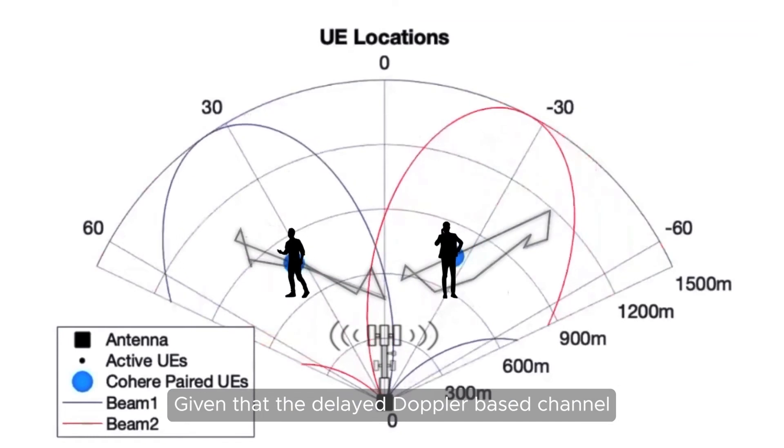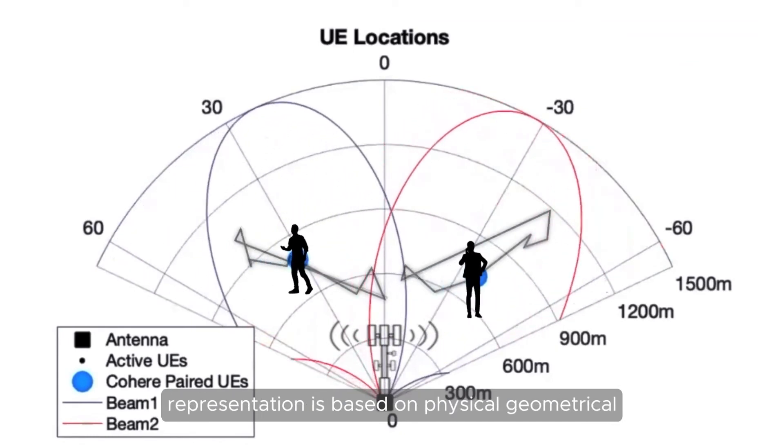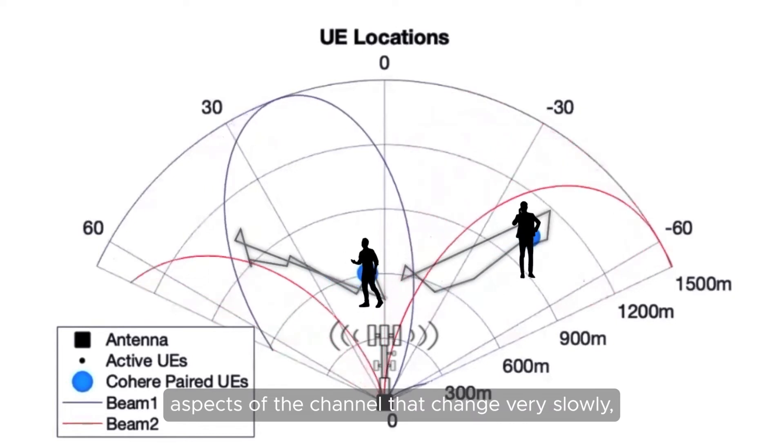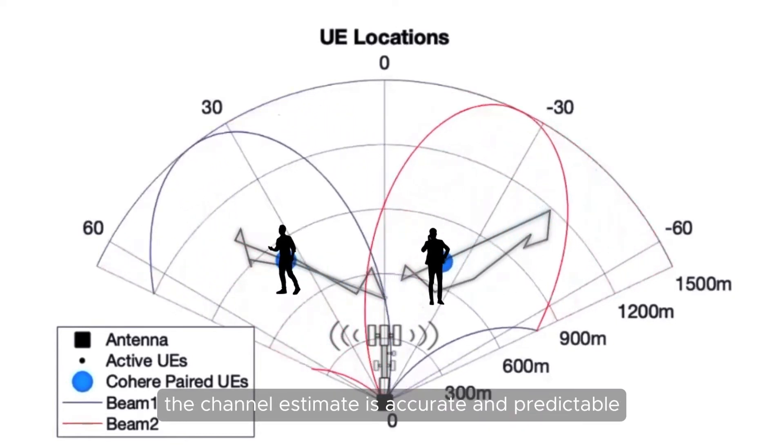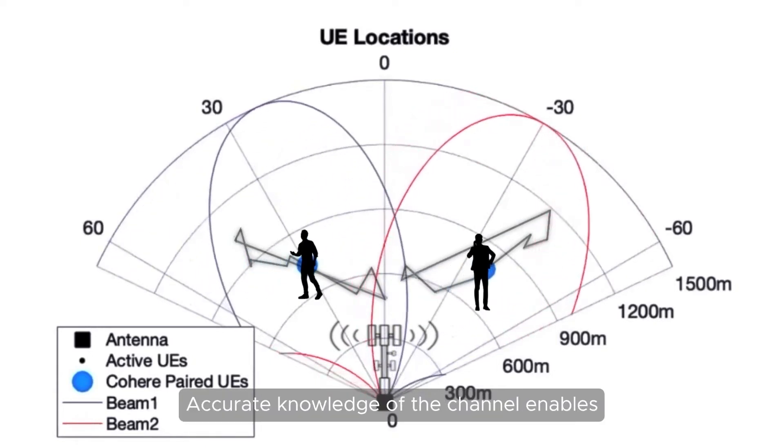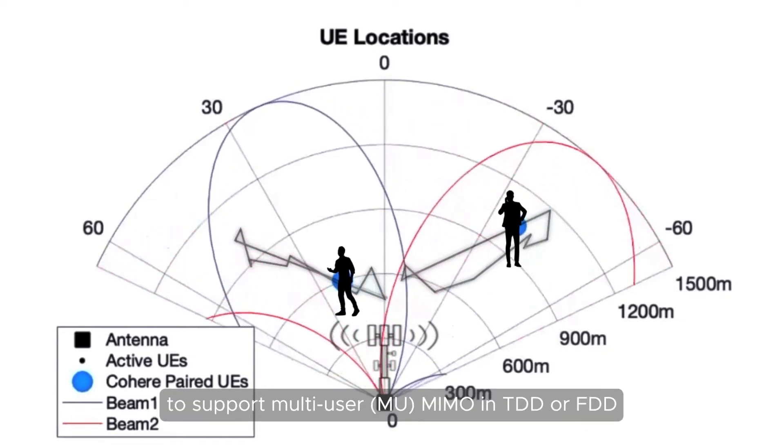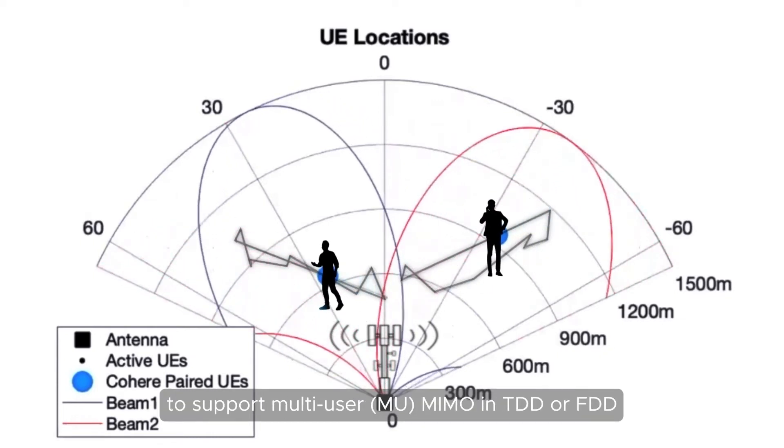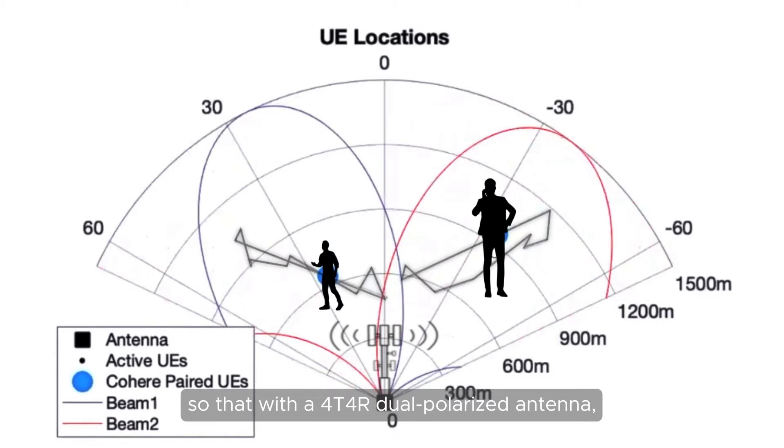Given that the delayed Doppler-based channel representation is based on physical, geometrical aspects of the channel that change very slowly, the channel estimate is accurate and predictable across time and frequency. Accurate knowledge of the channel enables the formation of orthogonal beams to support multi-user MIMO in TDD or FDD. Orthogonal beams allow spectral reuse so that with a 4T4R dual polarized antenna, cell throughput is nearly doubled.